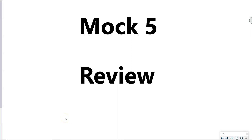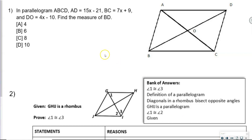In this video I'm going to go over the Mach 5 review. It says in parallelogram ABCD, AD is equal to 15x minus 21, BC equals 7x plus 9, and DO is 4x minus 10. Find the measure of BD. To find the measure of BD, we're going to have to look at some relationships.